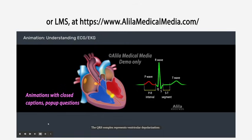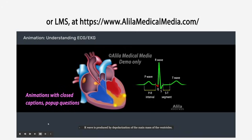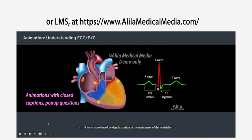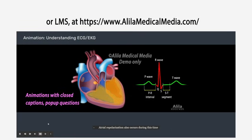The QRS complex represents ventricular depolarization. The Q wave corresponds to depolarization of the interventricular septum. The R wave is produced by depolarization of the main mass of the ventricles. The S wave represents the last phase of ventricular depolarization toward the base of the heart. Atrial repolarization also occurs during this time, but the signal is obscured by the large QRS complex.